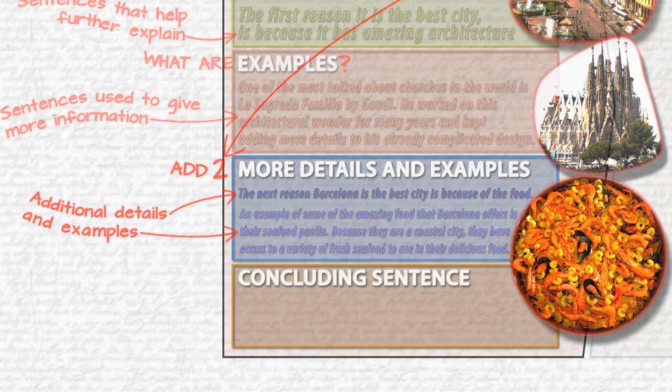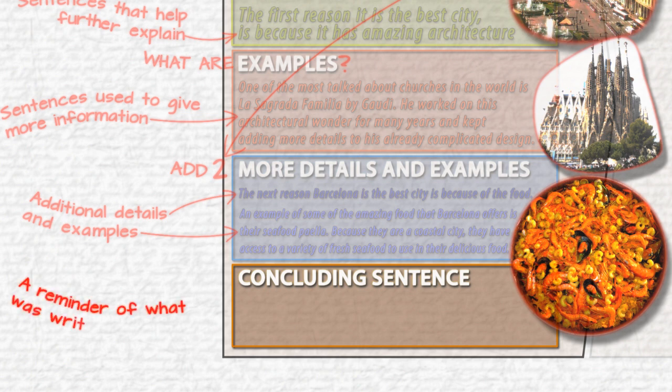This brings us to our concluding sentence. A concluding sentence is another way to restate the topic sentence and to give a summary of the ideas presented in your paragraph.